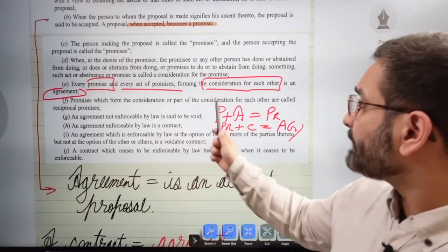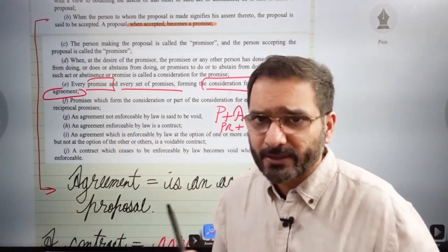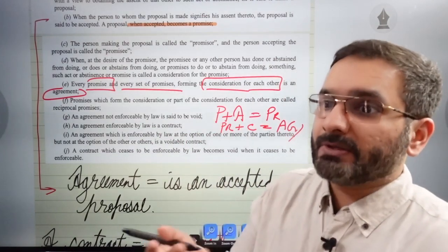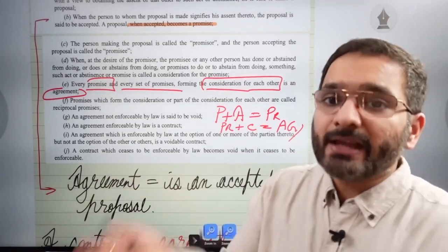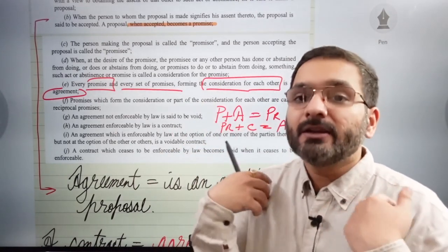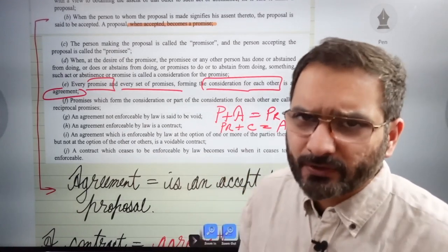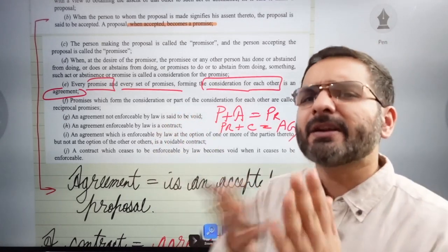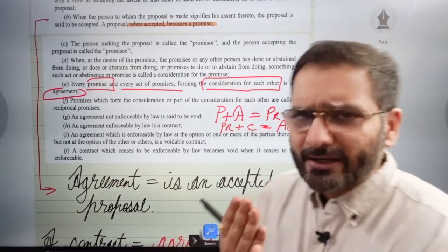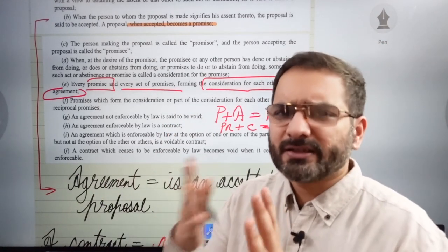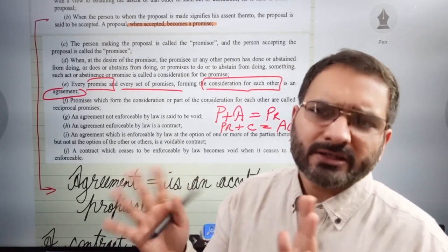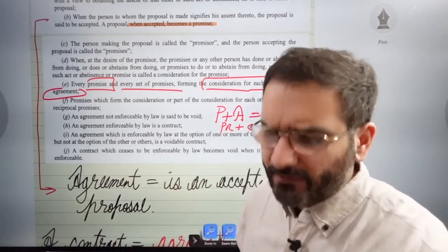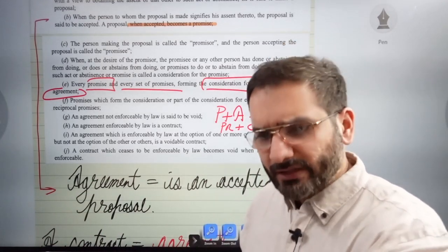Promises which form the consideration for each other are called reciprocal promises. For example, you pay the shopkeeper — that's an implied promise — and they promise to deliver the goods to you in return. That is what we call a reciprocal promise. We will revisit this in Section 51 of the course in more detail, but remember that reciprocal promises are the most frequent in everyday use.